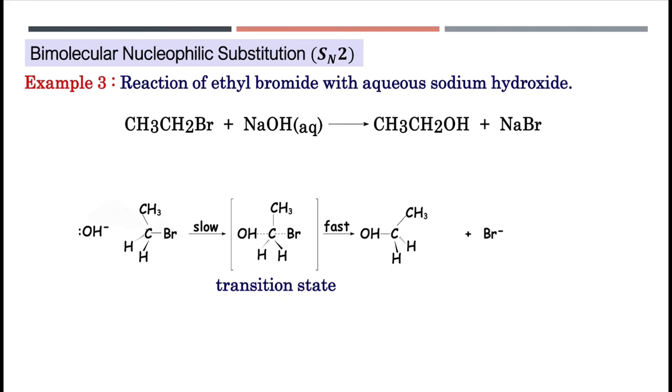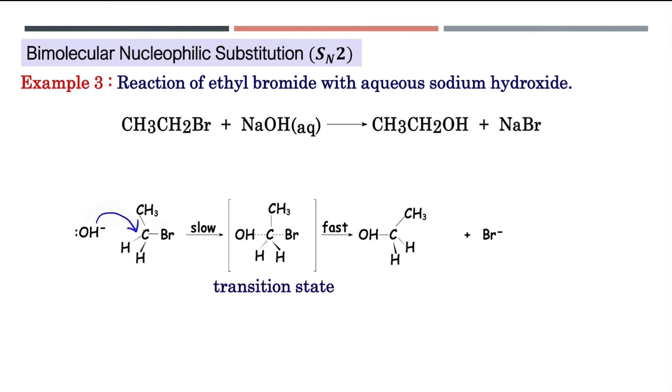Untuk kita tulis SN2 reaction ini, nucleophile akan attack daripada belakang. Lepas tu Br akan keluar. Tindak balas ini adalah slow, menghasilkan satu transition state yang mana di sini bond is formed dan di sini pula bond is breaking. Tindak balas ini fast untuk menghasilkan alkohol dan juga ion bromide. So kalau kita lihat reactant dengan produk, dia mesti ada inversion of configuration.